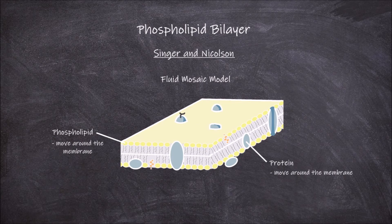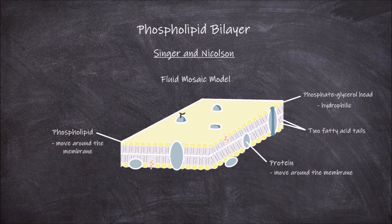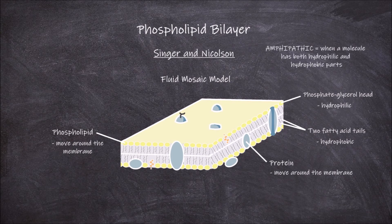In this model, the phospholipid bilayer consists of phospholipids with heads facing opposite directions. Phospholipids consist of a phosphate glycerol head and two fatty acid tails. The phosphate heads facing outwards are hydrophilic and the tails are hydrophobic facing inwards. Hydrophilic means water-loving — hydrophilic molecules attract water, such as polar and charged molecules. Hydrophobic means water-fearing — hydrophobic molecules repel water, such as non-polar molecules. Amphipathic is the term used when a molecule has both hydrophilic and hydrophobic parts. Phospholipids are considered amphipathic, as the head is polar and hydrophilic whilst the tails are non-polar and hydrophobic.